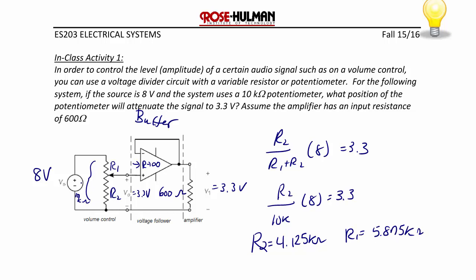So we just have to set the potentiometer in such a way that it divides into two resistors where the bottom one is 4.125 kilohms.